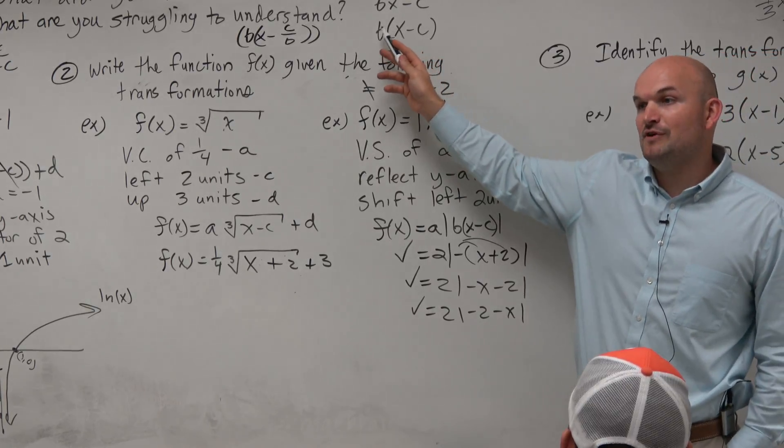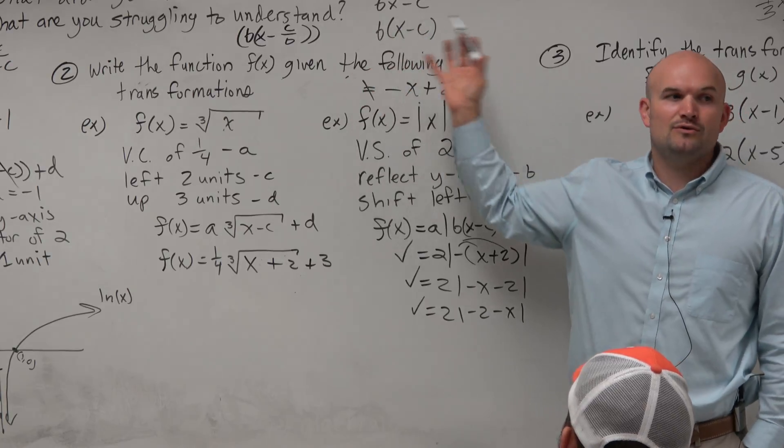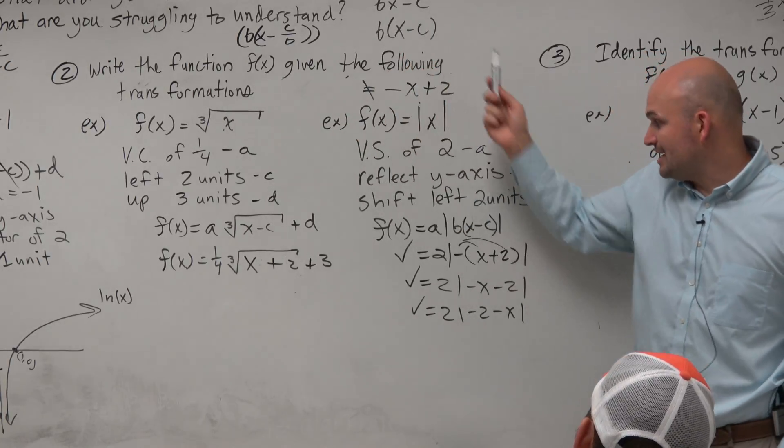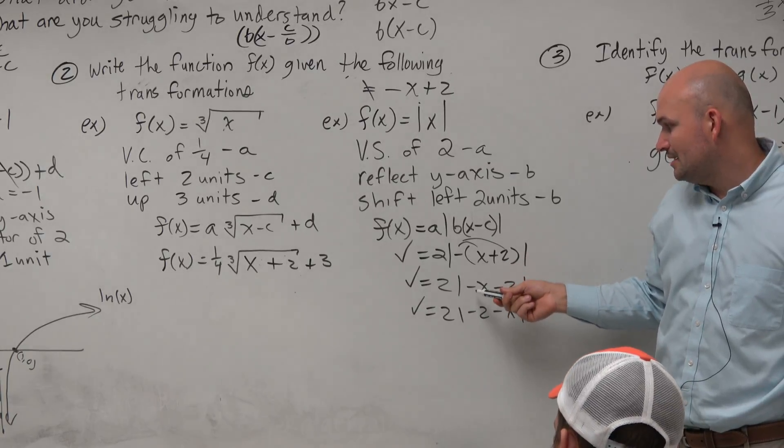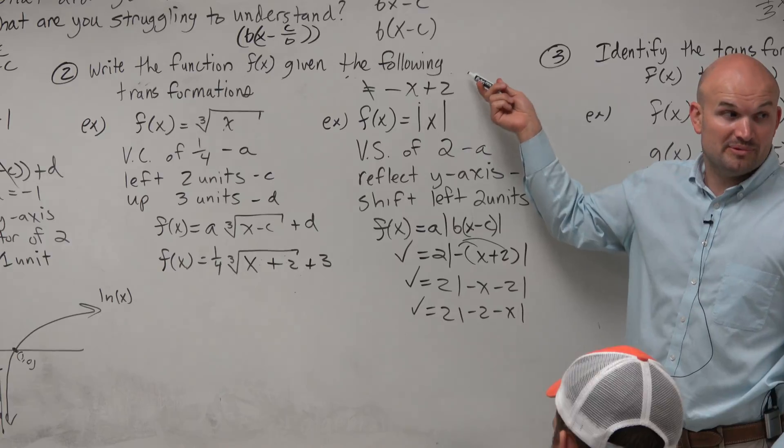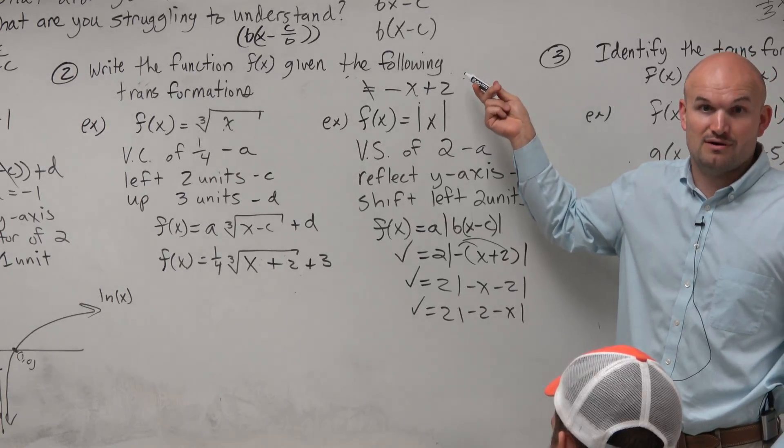You've got to make sure if you have a b and a c, that when you're entering it in, that you have it in that factored form. Because you guys can see the correct answer is negative x minus 2, not negative x plus 2. But that will be a very good answer choice that a lot of people will get wrong.